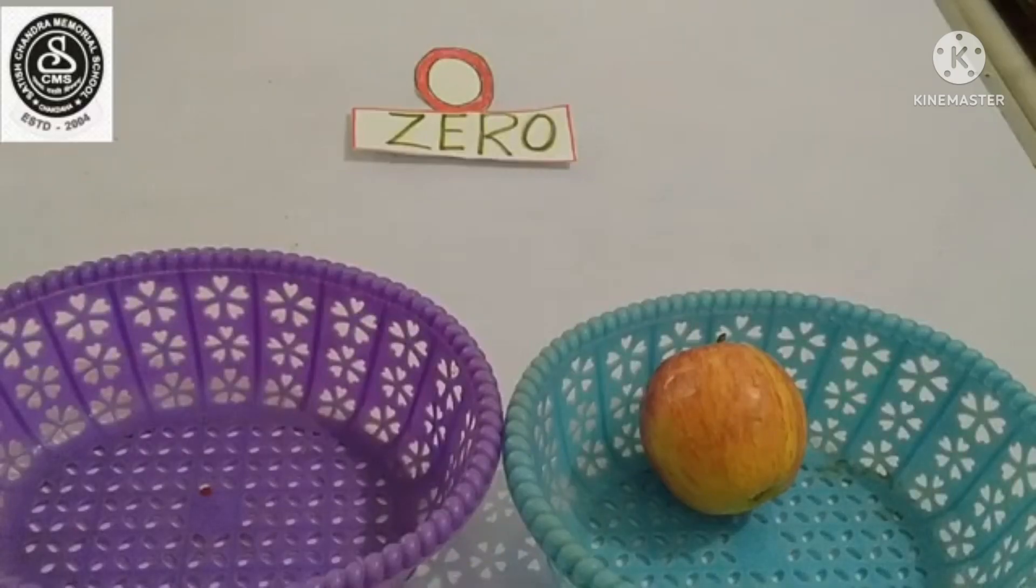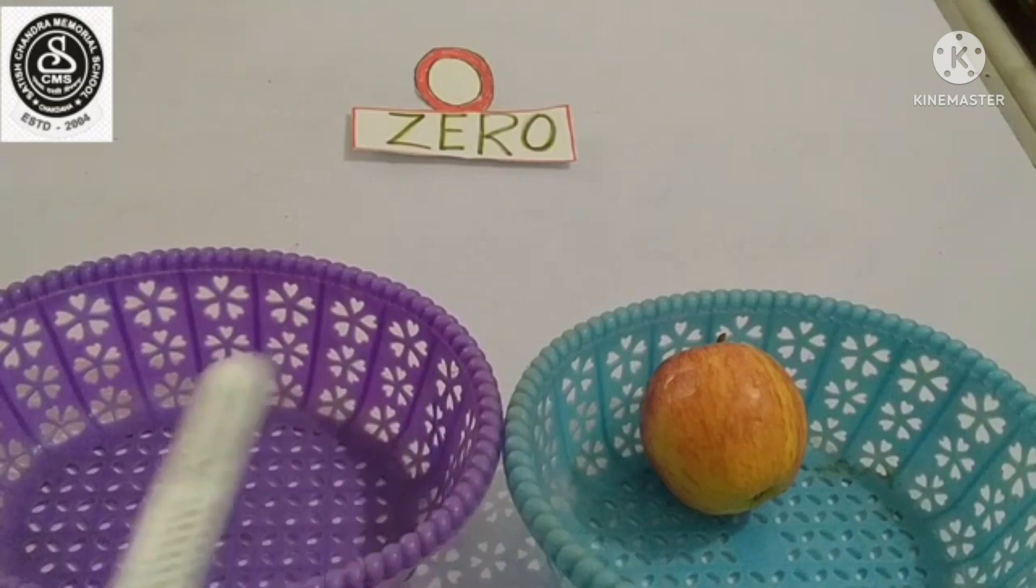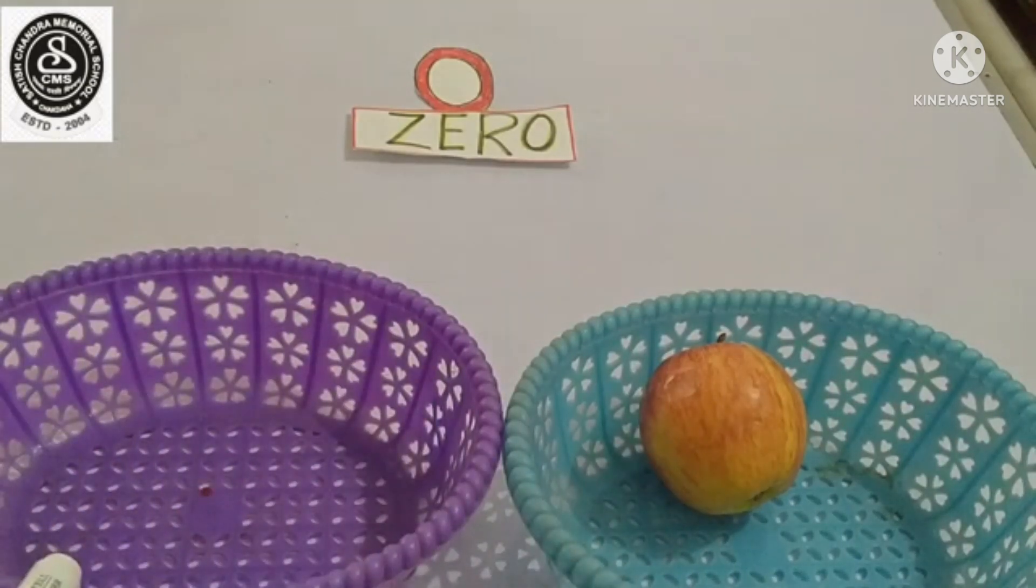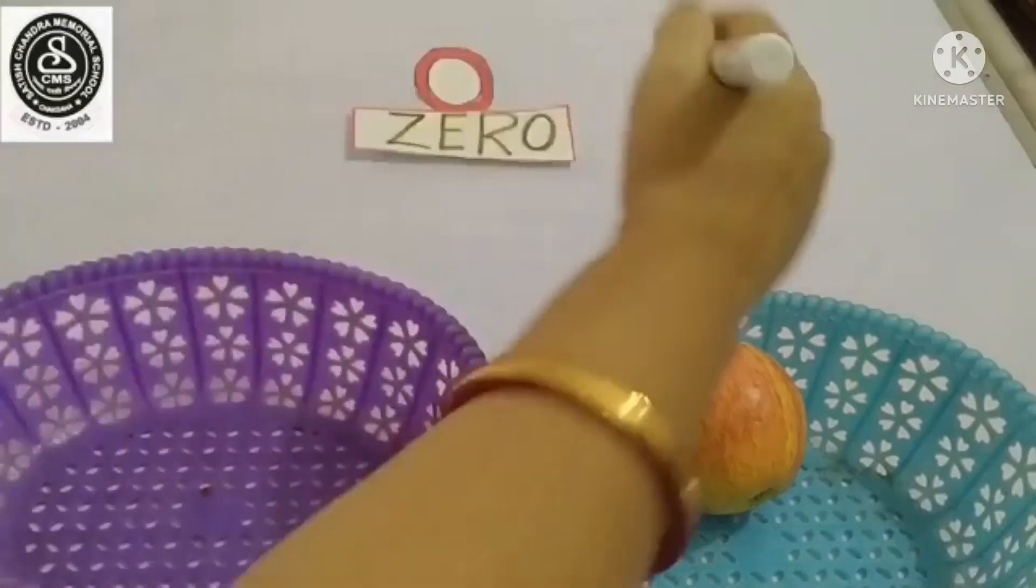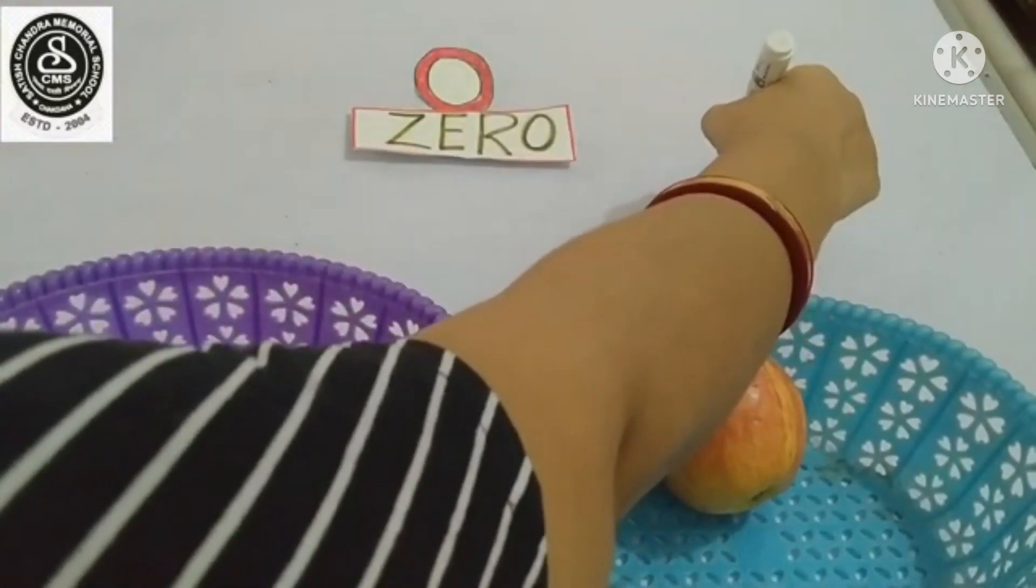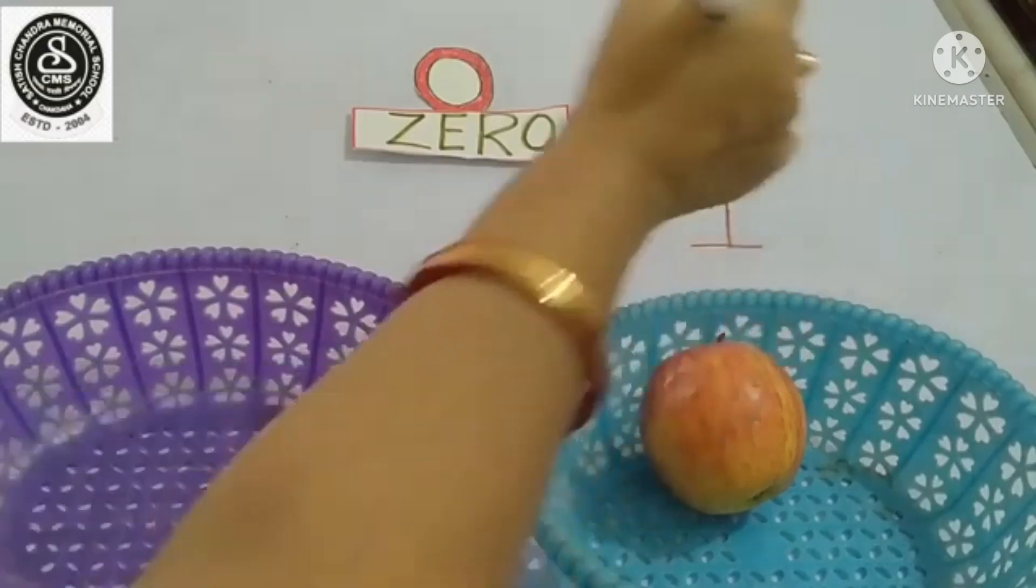Now, everybody, just see, I have two baskets. In this basket, nothing is there. Right? And in another one, I have an apple. How many apples are there? Yes, you are right. Number one apple. So, I am writing here, number one.